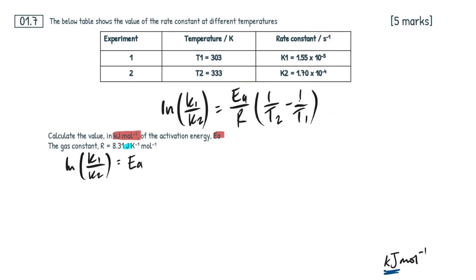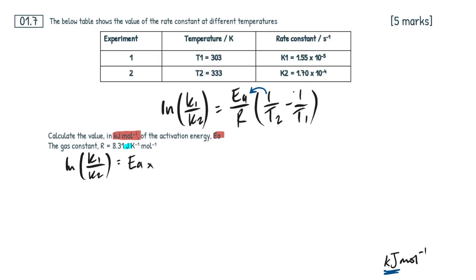Instead of it being EA over R multiplied by the bracket, I'm just going to bring this bracket — 1 over T2 minus 1 over T1 — to the top of the fraction, and then all divided by R. You don't have to do this step; you can skip it entirely. But when people aren't too confident at rearranging equations, I like to do it this way so they find it a bit easier. This expression, 1 over T2 minus 1 over T1, is exactly the same as this divided by 1, so we get EA multiplied by (1/T2 minus 1/T1), all divided by R.